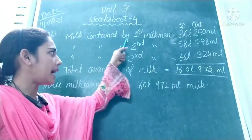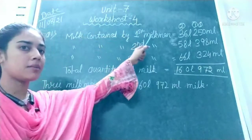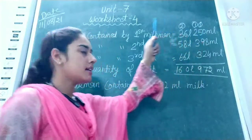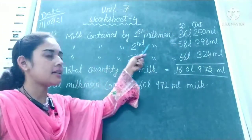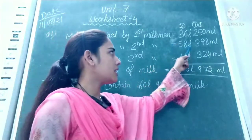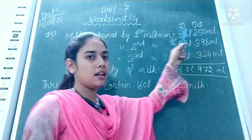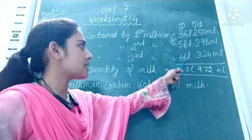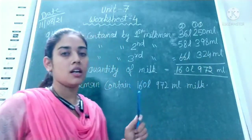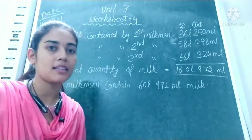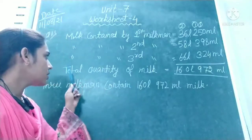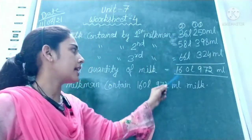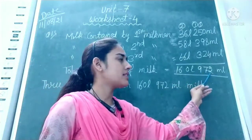Milk contained by the first milkman is 36 litres 250 millilitres. Milk contained by the second milkman is 58 litres 396 millilitres. Milk contained by the third milkman is 66 litres 324 millilitres. We add these three quantities and get 160 litres 972 millilitres.